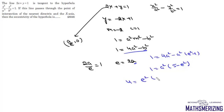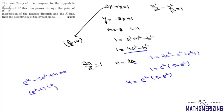This simplifies to e⁴ - 5e² + 4 = 0, which factors as (e²-1)(e²-4) = 0. So e² = 1 or e² = 4, giving e = 1 or e = 2. Since this is a hyperbola, the eccentricity must be greater than 1, so e = 2 is the answer.